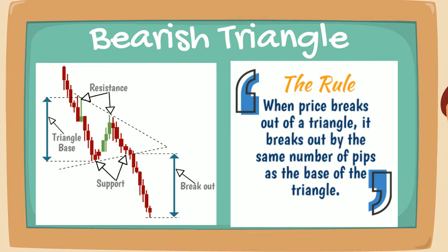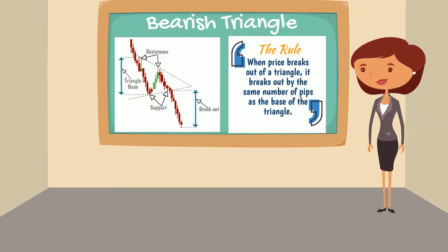A triangle is a continuation pattern, so a bearish symmetrical triangle would form during a downtrend when the market is taking a short break. It would then continue the downtrend when it breaks out of the triangle.